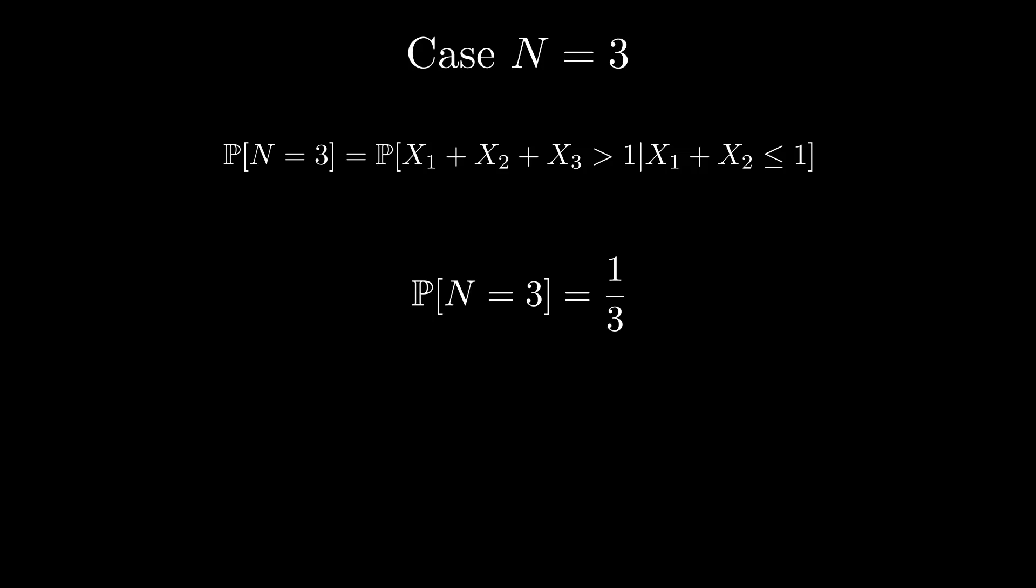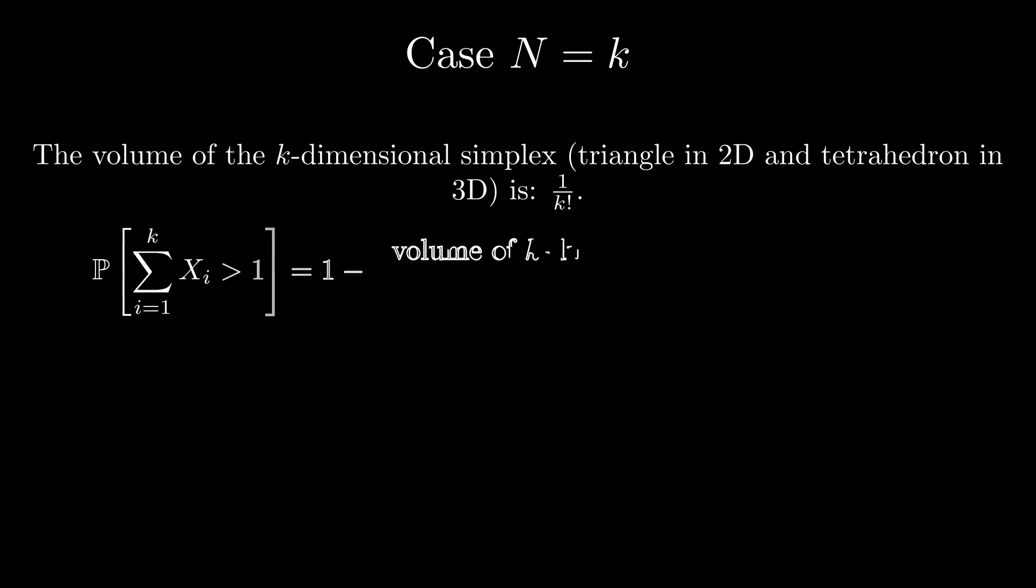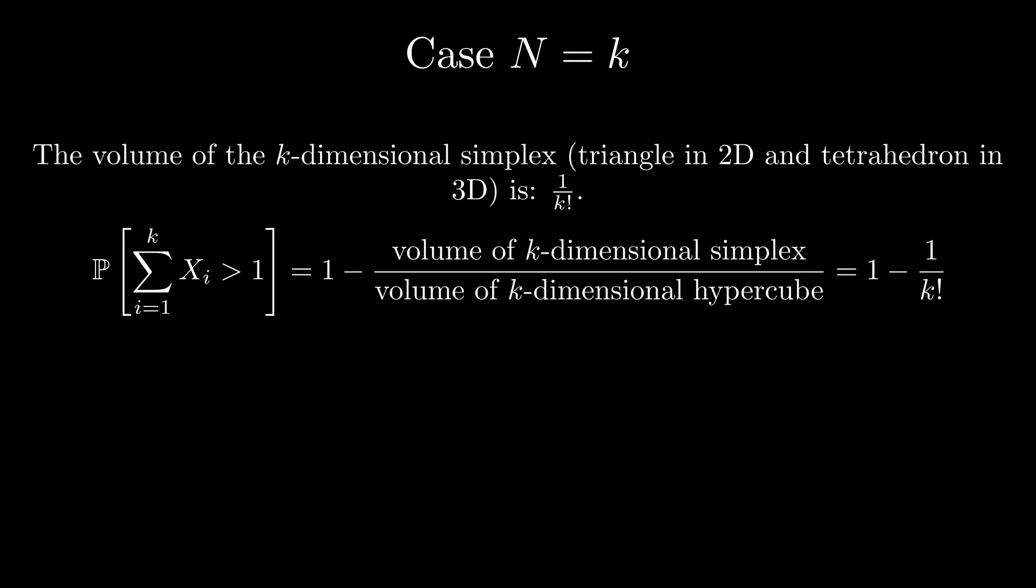We can extend this argument to higher values. For the case big N equals k, note that the volume of the k-dimensional simplex, which is a triangle in 2D or a tetrahedron in 3D, is 1 over k factorial. Therefore, the probability that the sum of the first k variables exceeds 1 is 1 minus 1 over k factorial.